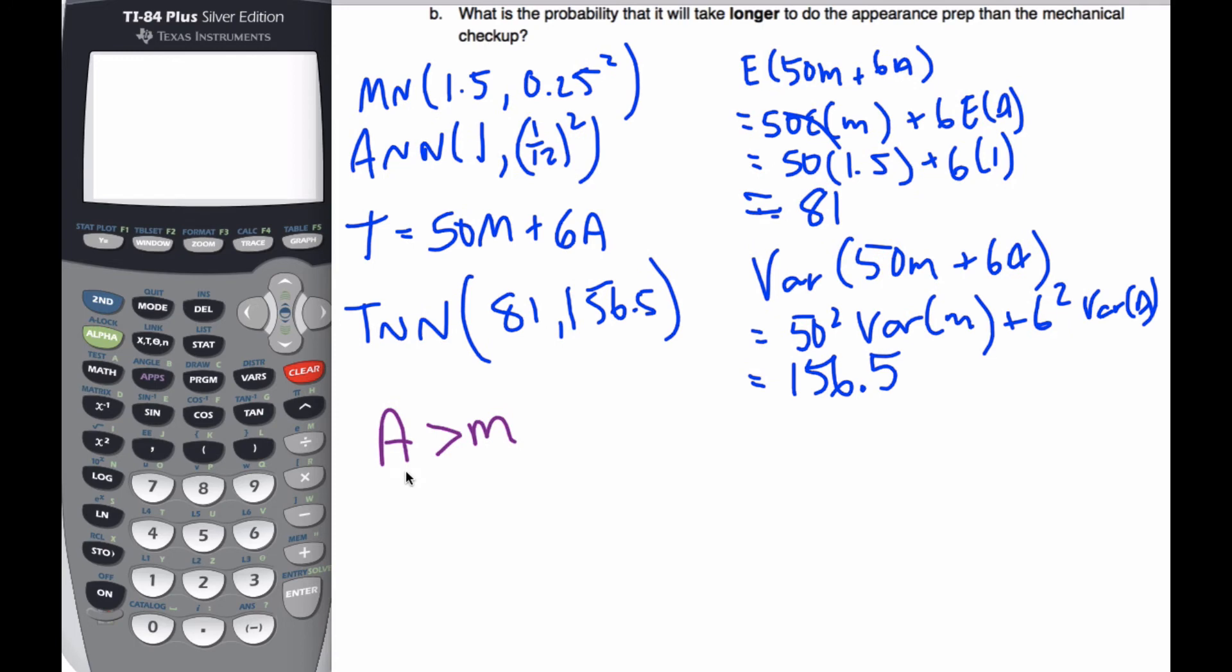So I find this probability. Well, if I'm going to do that, I can make a new random variable of A minus M. And I want that bigger than 0. But here's my new random variable.